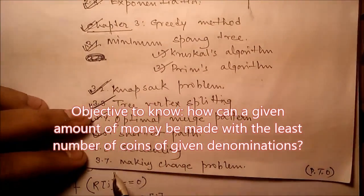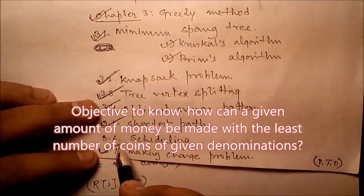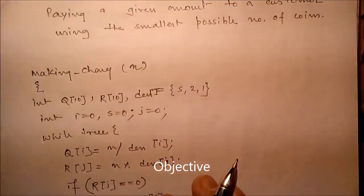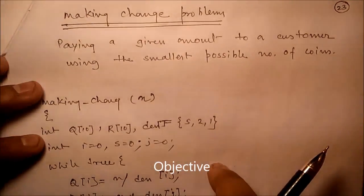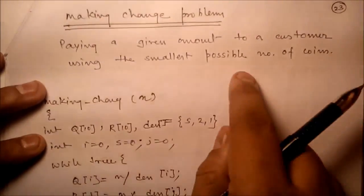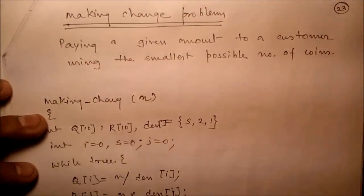Now we have completed shortest path, now we will talk about the making change problem. In making change problem, we're paying a given amount to a customer using the smallest possible number of coins.